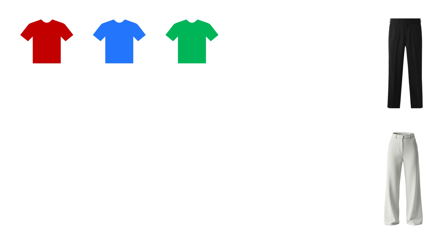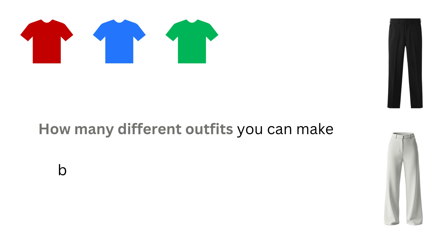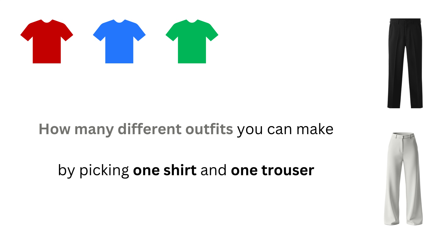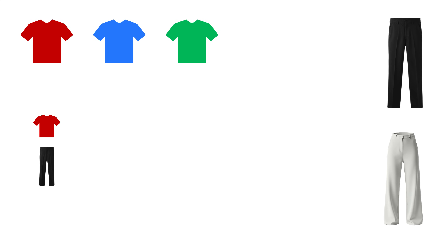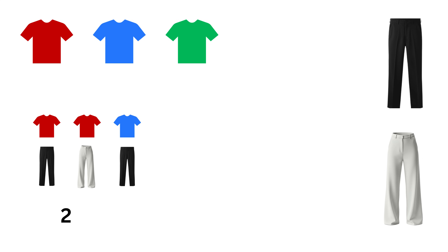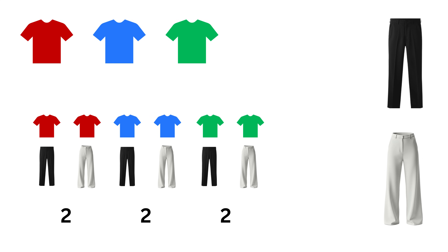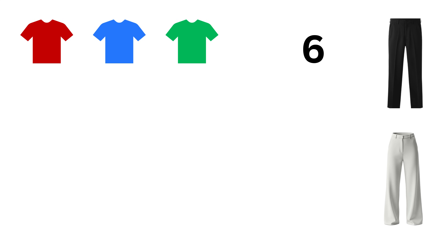Imagine you have three shirts — red, blue, and green — and two trousers — black and white. You want to know how many different outfits you can make by picking one shirt and one trouser. Starting with the red shirt, you can pair it with black or white trouser, giving two options. The blue shirt also gives two options, and the green shirt gives two more. So two plus two plus two equals six outfits. Instead of counting one by one, the rule of product lets us multiply: three shirts multiplied by two trousers equals six outfits.